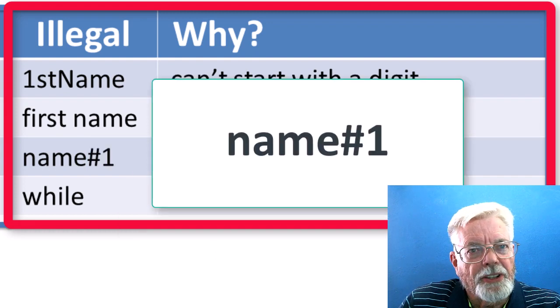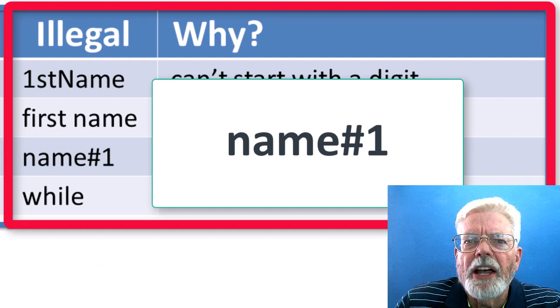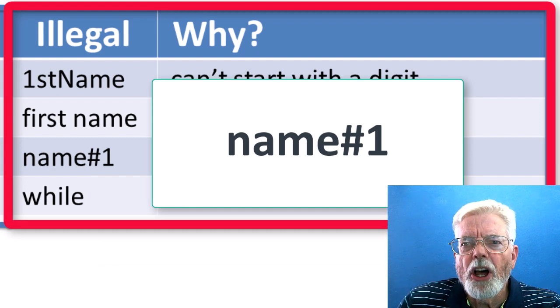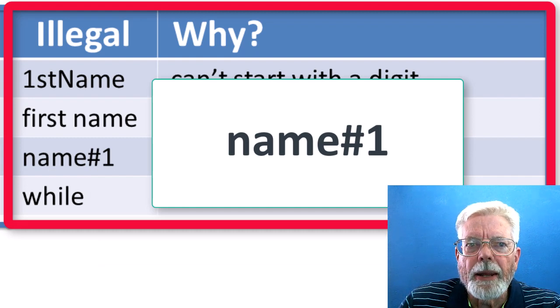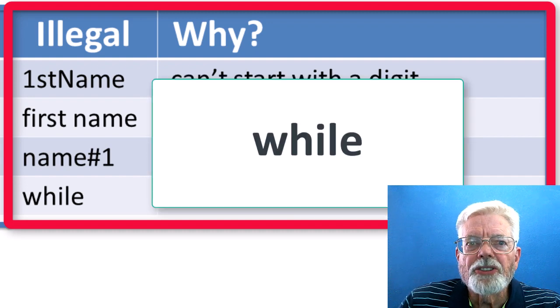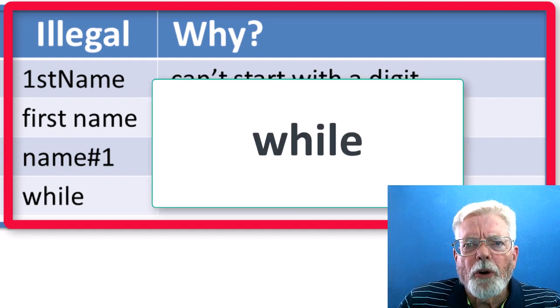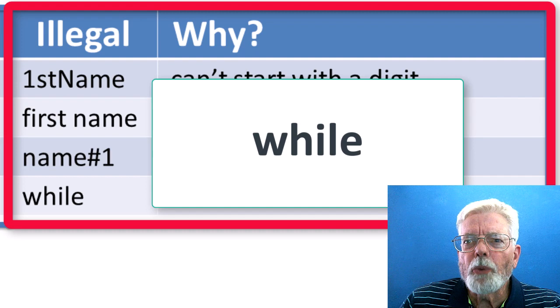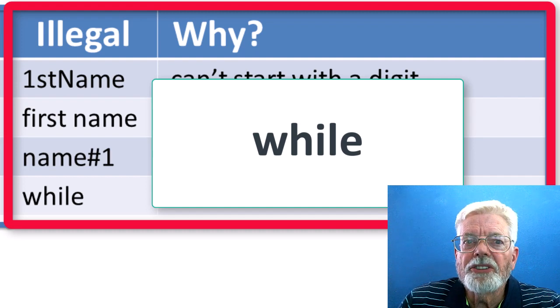Name number one is illegal because the pound sign or hash mark is not a legal character for variable names. While is not a legal name because the word while is one of the reserved words that belongs to the language itself.